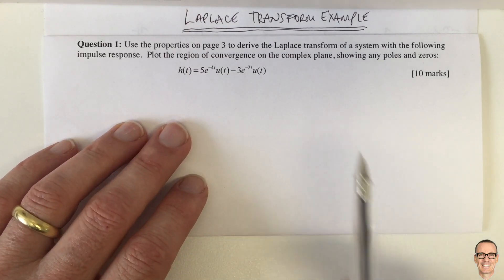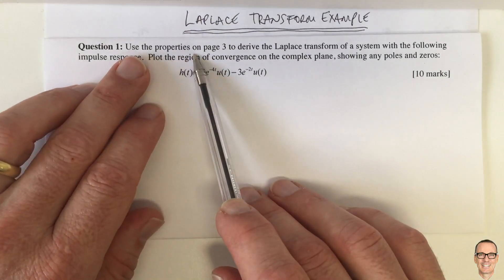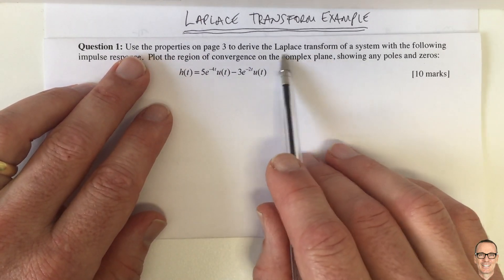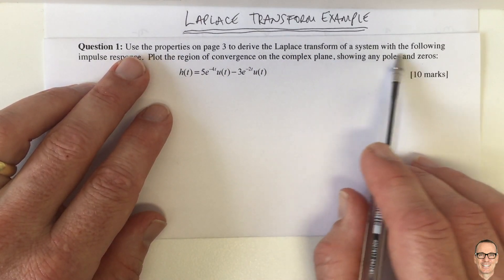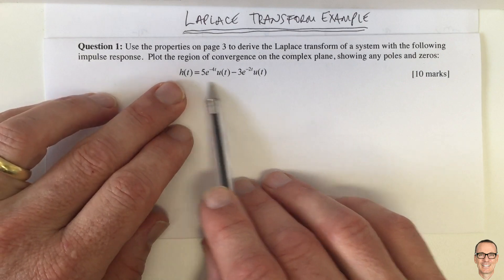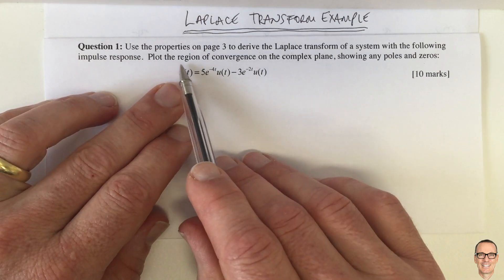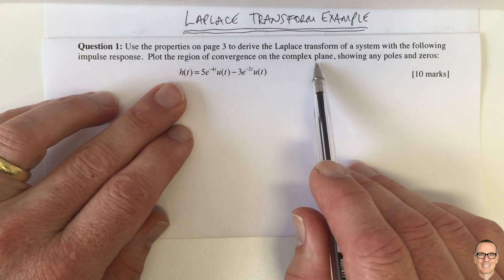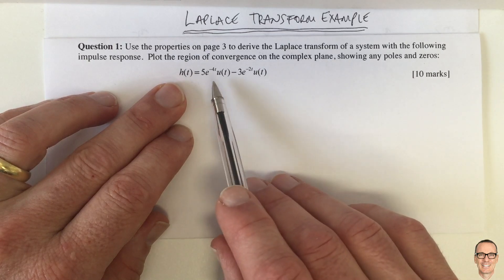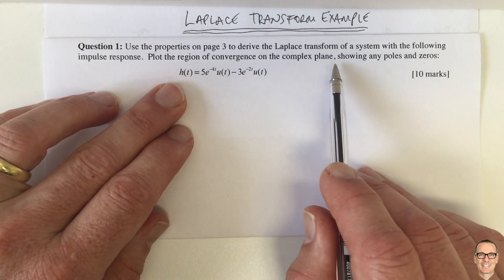So here's a Laplace transform example where we're asked to use the properties of Laplace transforms to derive the transform of a system with this impulse response here. And we're also asked to plot the region of convergence on the complex plane, so that's the values of s that the transform holds for.